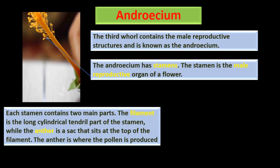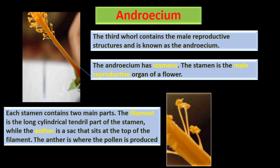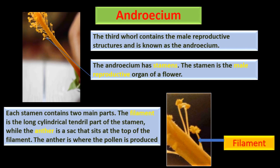Each stamen contains two main parts. The filament is the long cylindrical tendril part of the stamen, while the anther is a sac that sits at the top of the filament. The anther is where the pollen is produced.